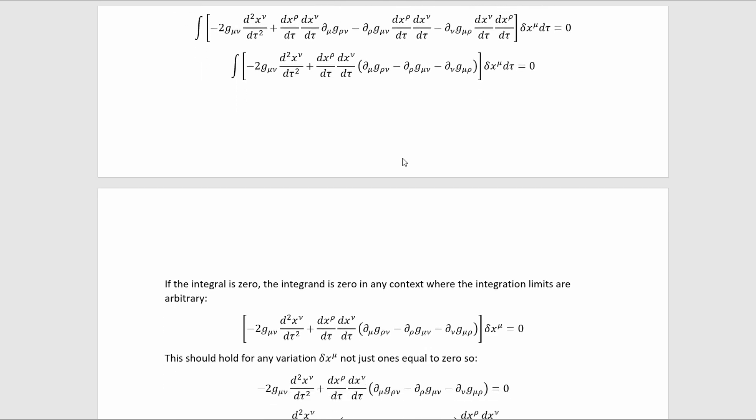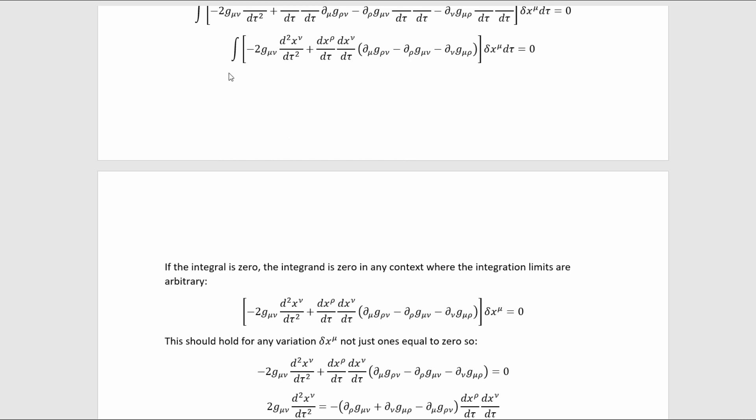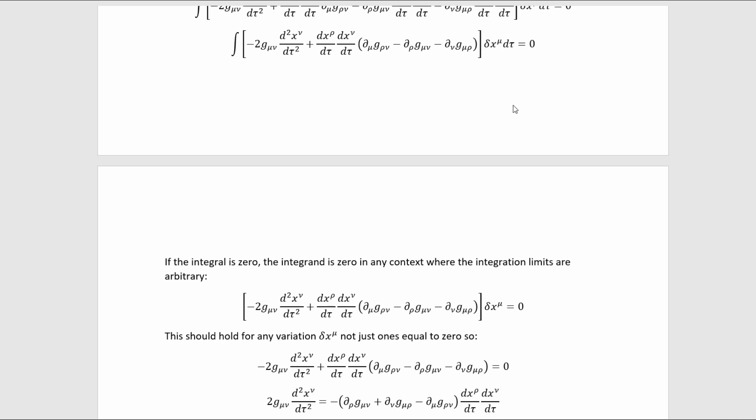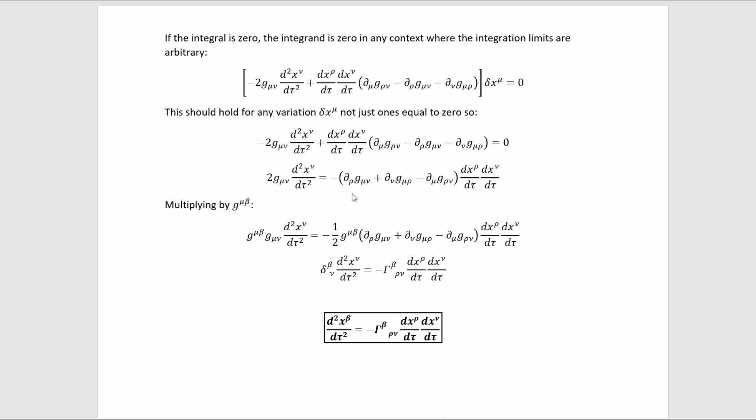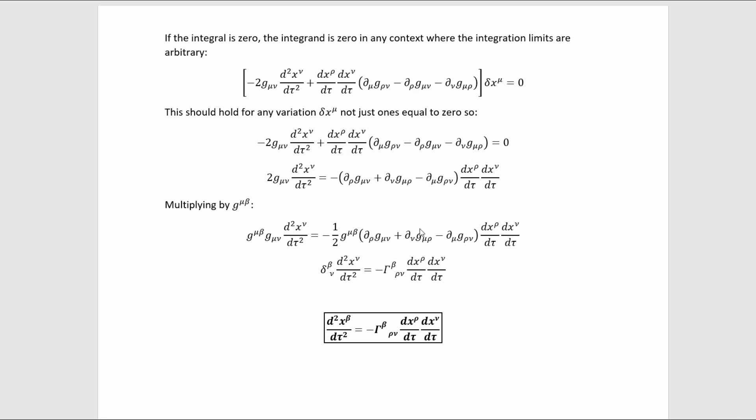But we're so far along in the calculation now that we don't need that anymore, so we can actually drop that with the same arguments. The integration limits here are arbitrary and it's always zero for any of those integration limits. So the integrand must be zero. And it also must be zero for any arbitrary variation delta x mu. Therefore, we're just left with this equation, which can then be easily manipulated into the recognizable geodesic equation. About the most complicated thing we have to do is a tiny amount of tensor algebra, really just some index juggling, to get the complete form of the Christoffel symbol to show up here. And there we go.